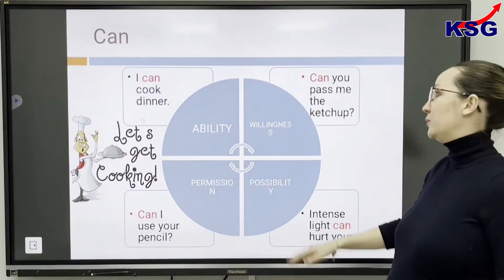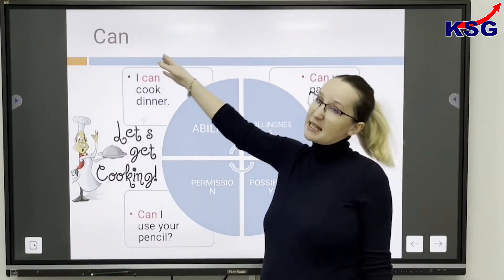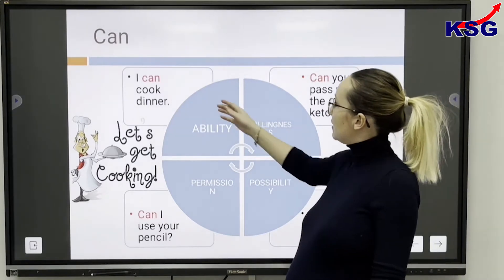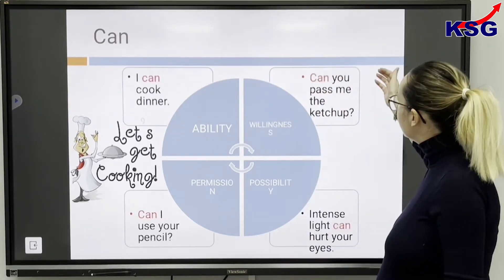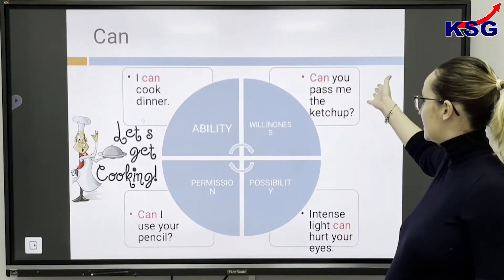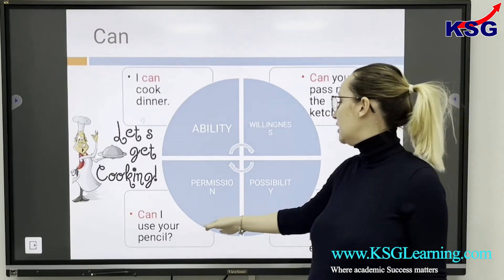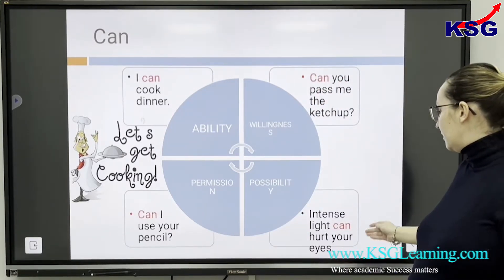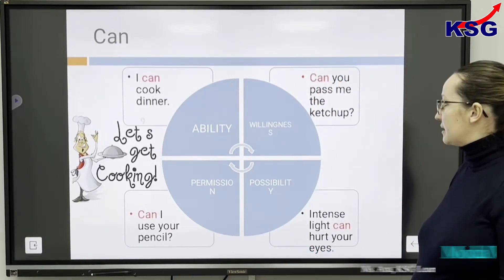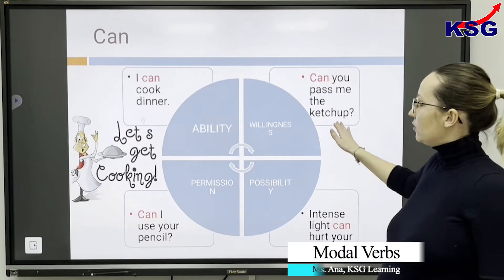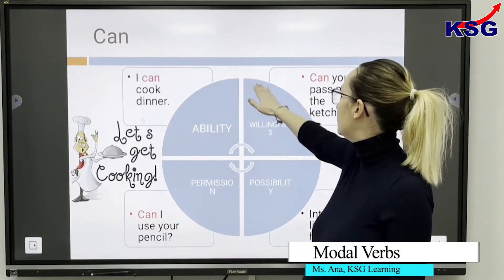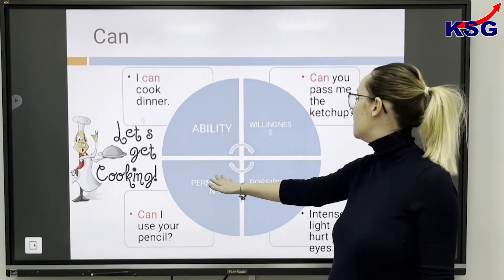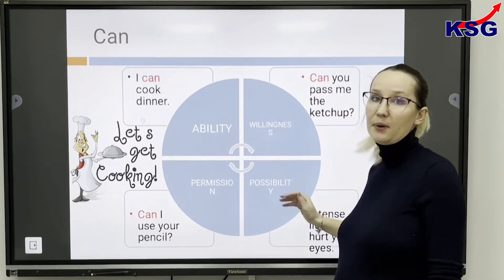One of the first modal verbs is CAN. Examples are: I can cook dinner. Can you pass the ketchup? Can I use your pencil? Intense light can hurt your eyes. All of these show ability, willingness, permission, and possibility.